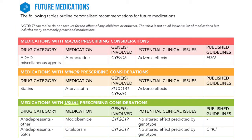The future medications section provides an overview of recommendations and alerts for the commonly prescribed medications covered by the test. Medications are classified as having major, minor or usual prescribing considerations, and are listed in alphabetical order grouped by drug class.